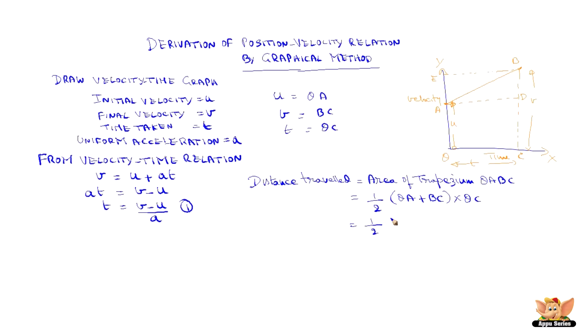We know oa is u and bc is v and oc is t which is equation number 2.